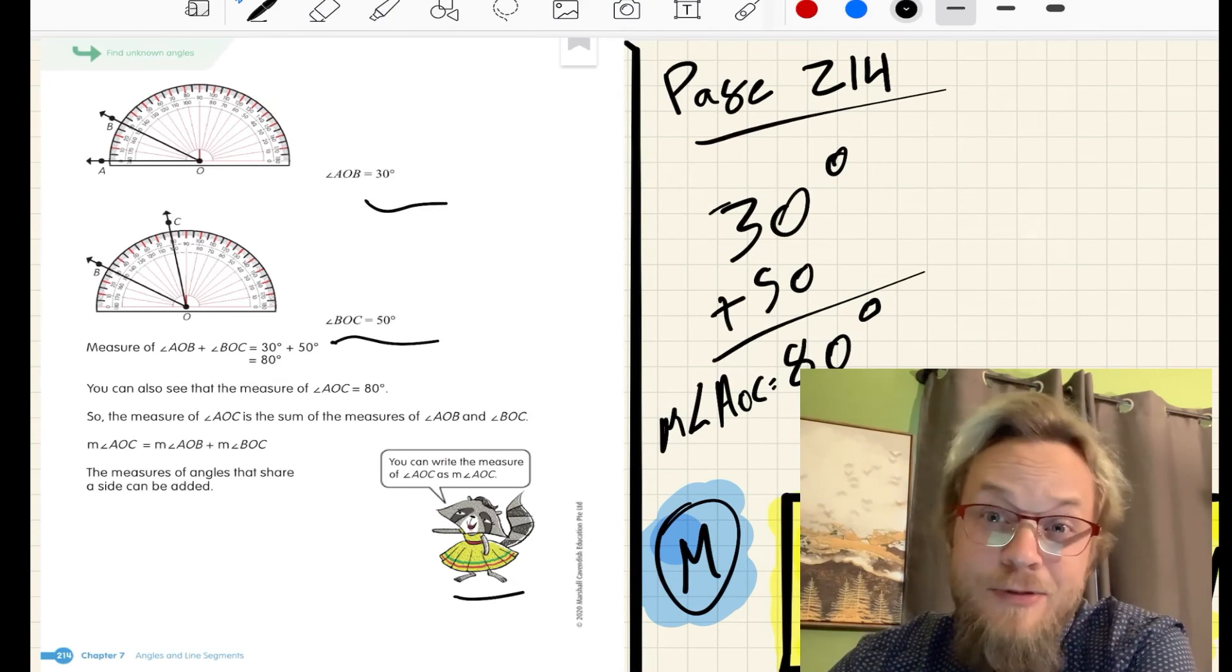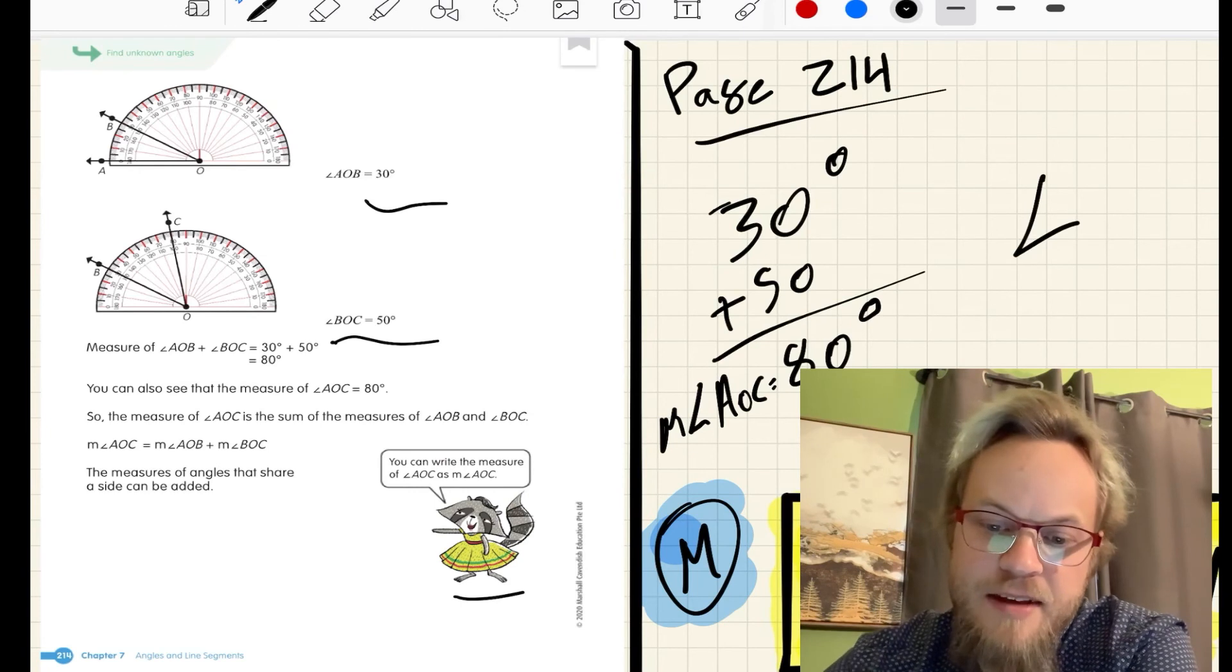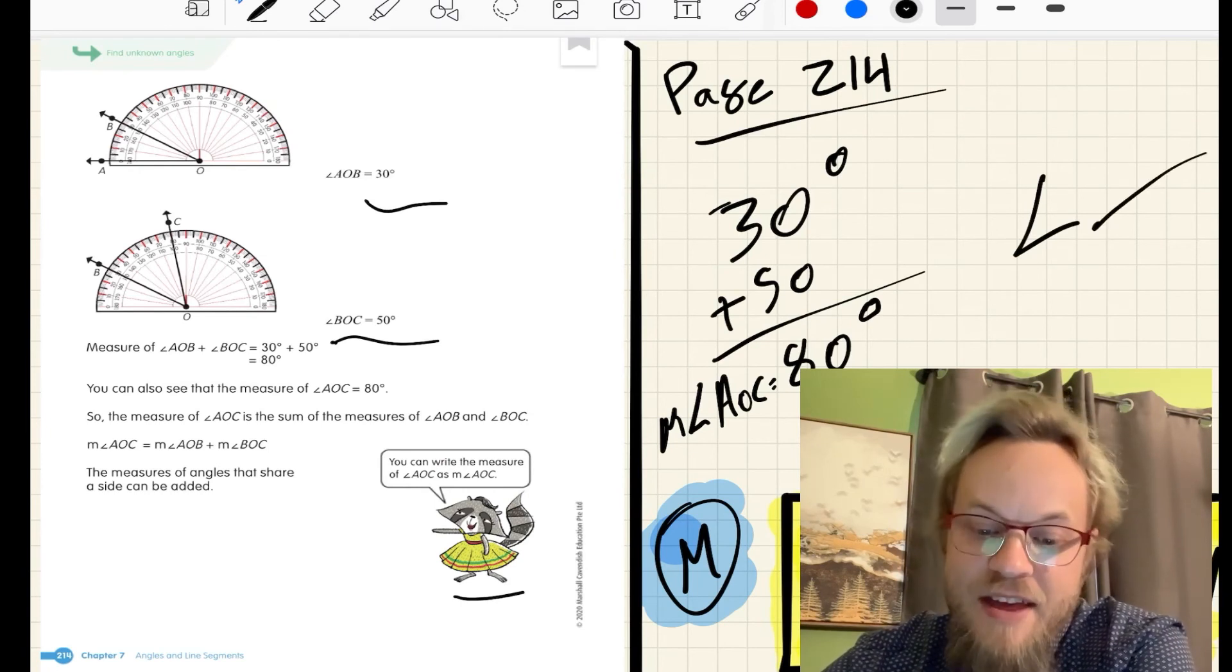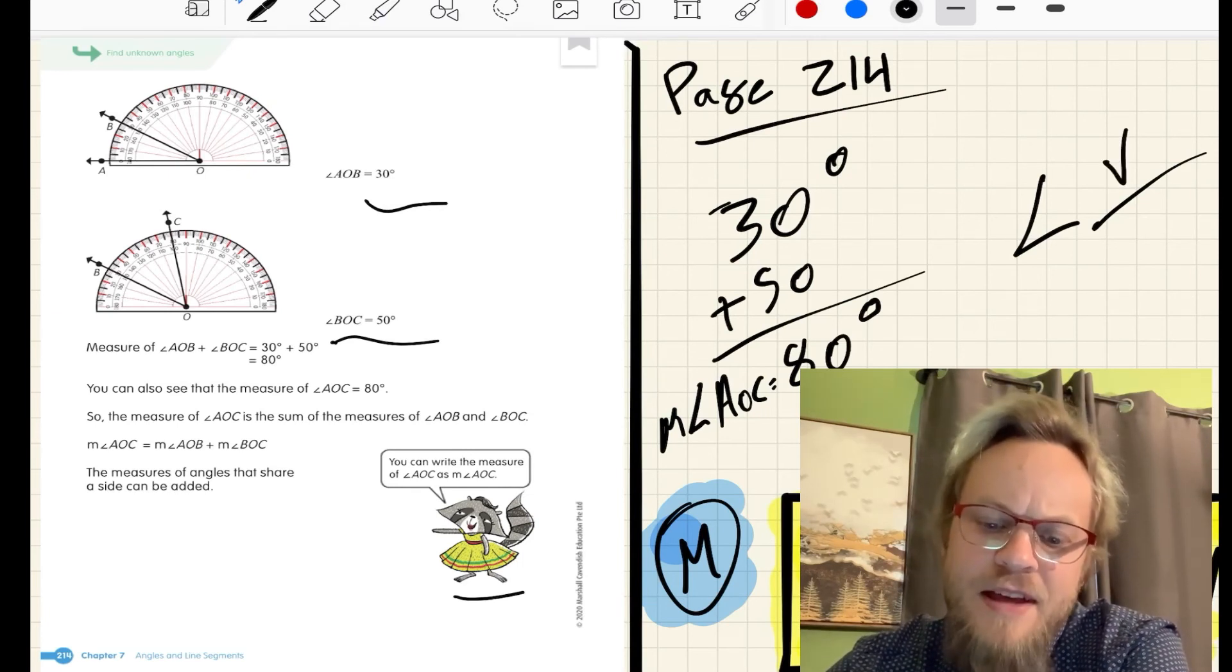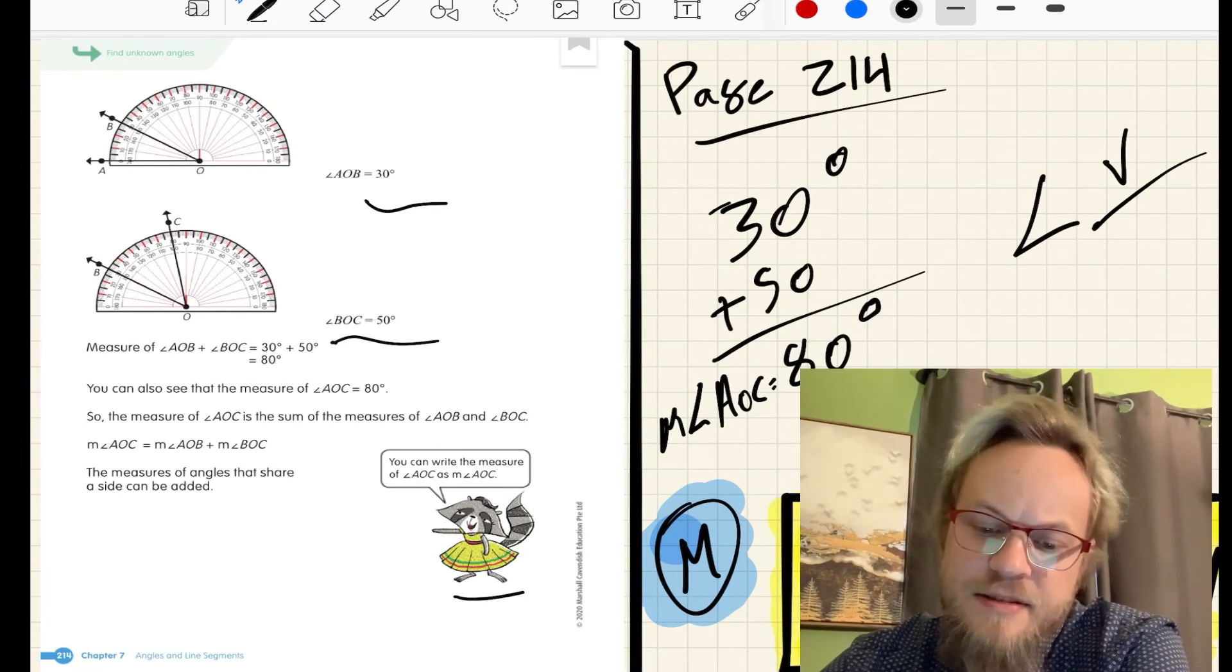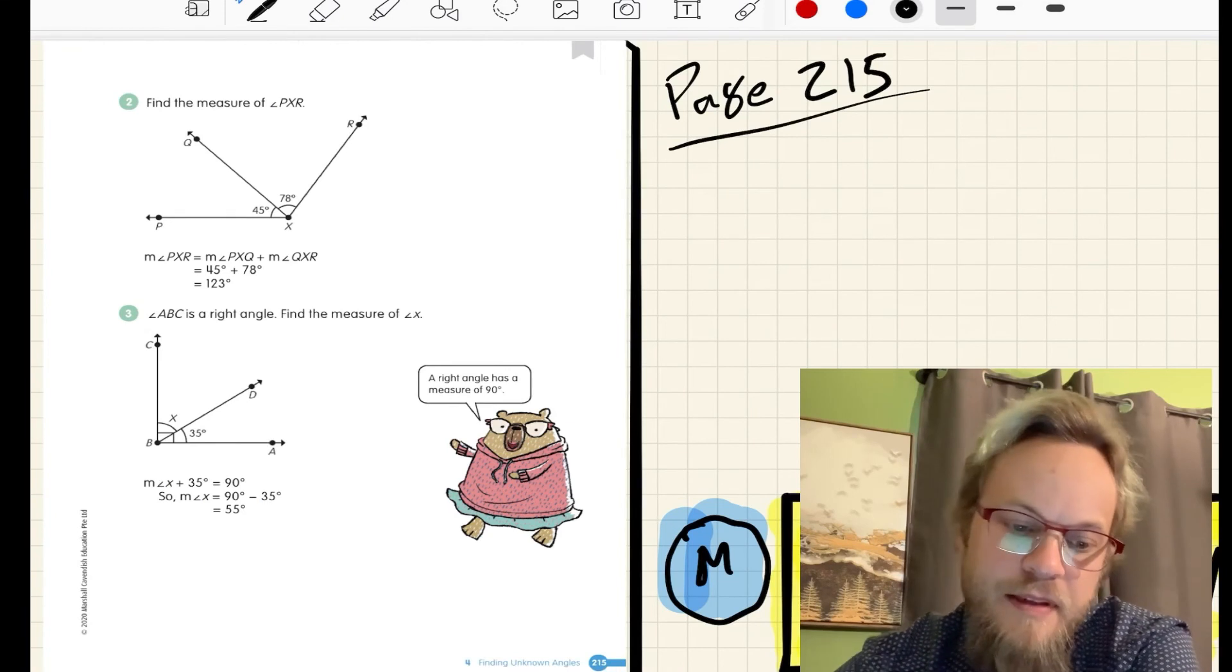For this lesson, if you forget the M for measurement, I'm okay with that, but please draw the angle sign, label your angle appropriately with your middle letter being your vertex, and then add or subtract.